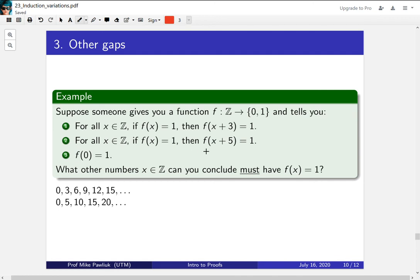And same for the second one. You can keep applying x plus 5. You plug in x equals 0, and then plug in x equals 5, and then plug in x equals 10. Now this seems like there's going to be lots of gaps and lots of missing things, but it turns out that you can mix the two properties.